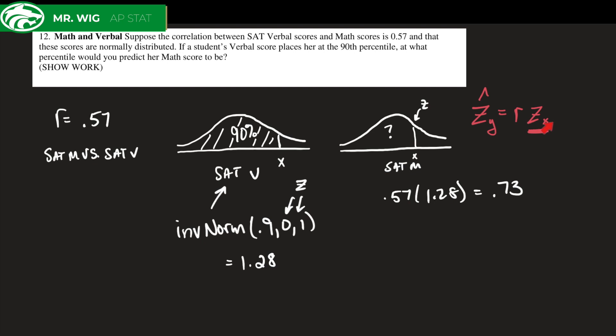Because that's not a percentile. This right here, we just did r times z, the z-score for x, and we just now got the approximate z-score for y.